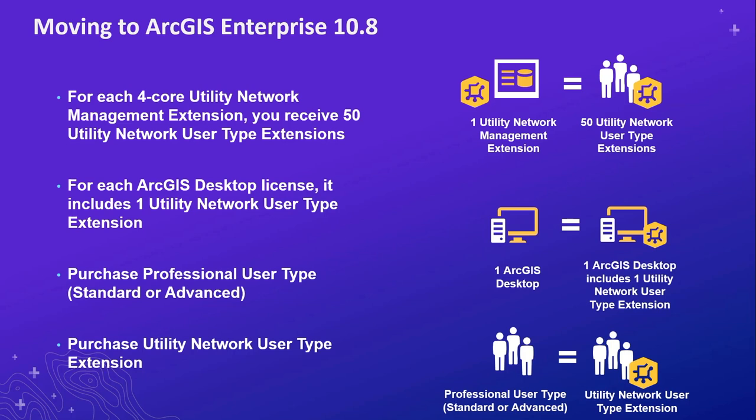For every four core utility network management server extensions you had prior to 10.8, you receive 50 utility network type extensions provisioned to your organization. Every ArcGIS Desktop license includes one utility network user type extension. Purchasing a Professional user type (Standard or Advanced) includes the ArcGIS Utility Network extension baked in. You can also purchase the extension through your sales rep.